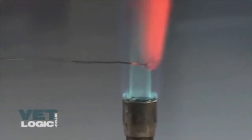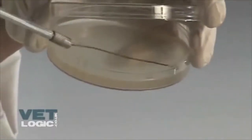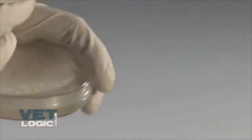Heat a metal loop in the blue Bunsen flame until it glows red. Using the loop, make a second well by drawing bacteria from the inoculation well.